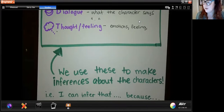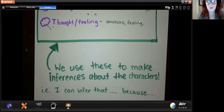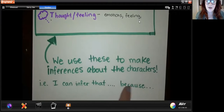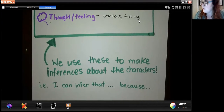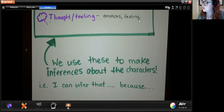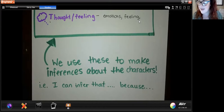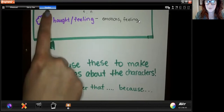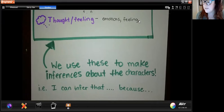You might hear your student say this, and I would really encourage them to say: 'I can infer that blank because...' — and this 'because' is our text evidence. So 'I can infer that Andre feels rushed because he ran out the door.' That evidence supports that inference. The 'because' is going to be what we labeled as our ADT.